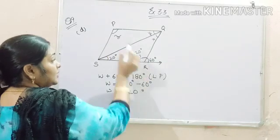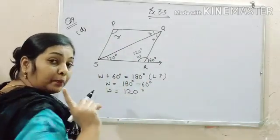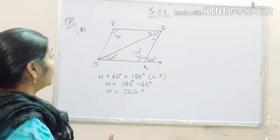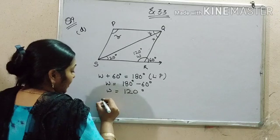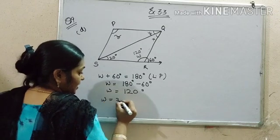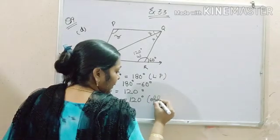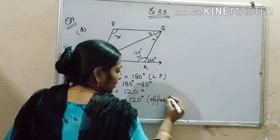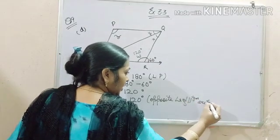Now this angle is opposite to it because these are parallelograms. And in parallelogram, opposite angles are equal. So W is equal to z is equal to 120 degree. Why? Opposite angles, angles of parallelogram are equal.